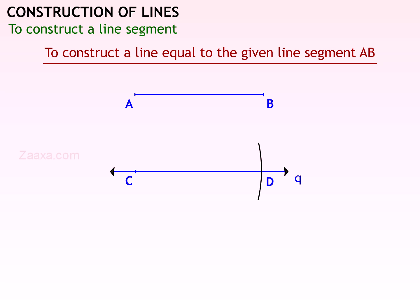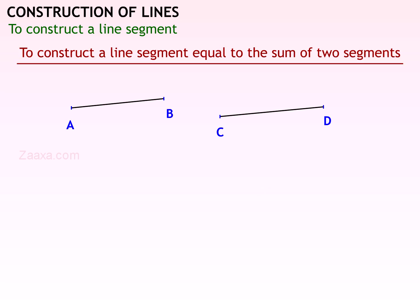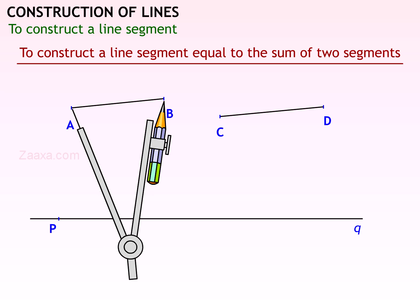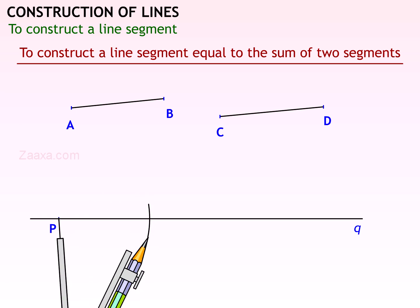You have constructed a line segment CD equal to AB. To construct a line segment equal to the sum of two segments: AB and CD are two line segments. You need to construct PQ whose length is equal to AB plus CD. Draw a line and mark a point P on it. First measure AB with the pair of compasses, draw an arc from P, and mark the point R. PR is equal to AB.